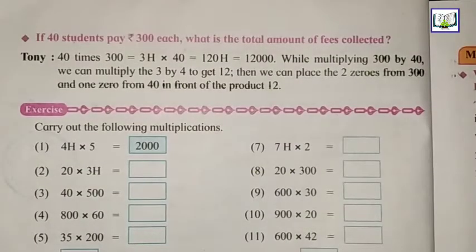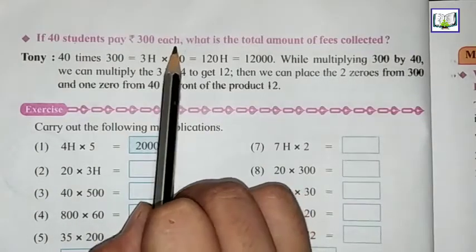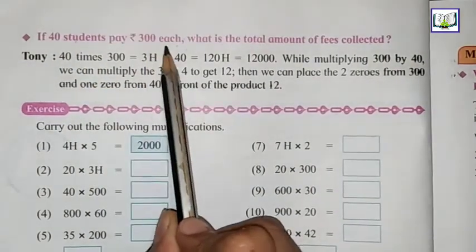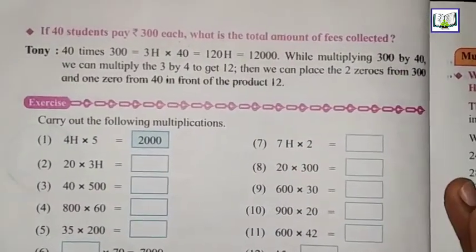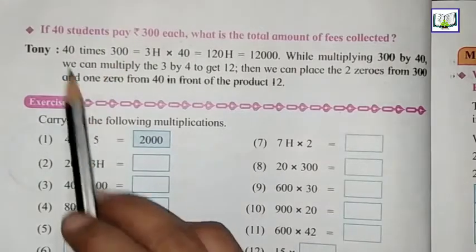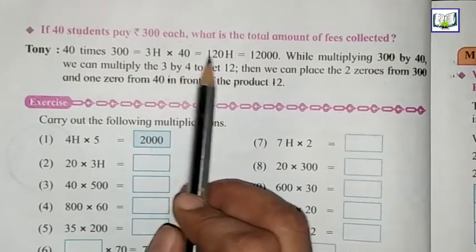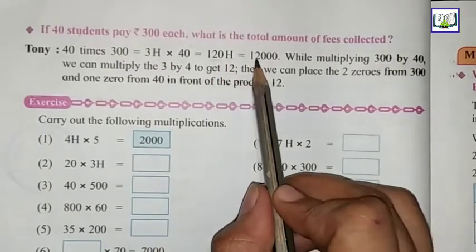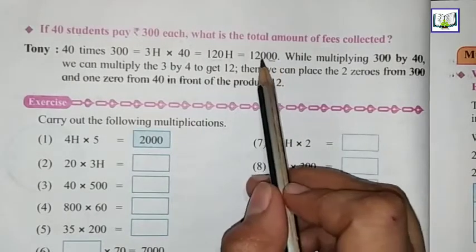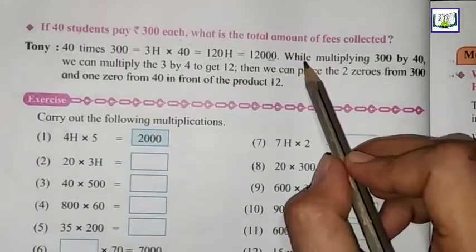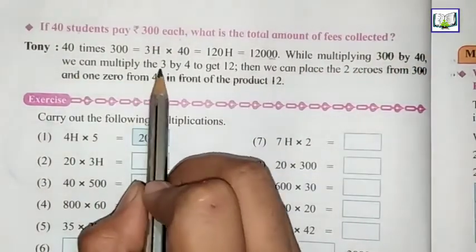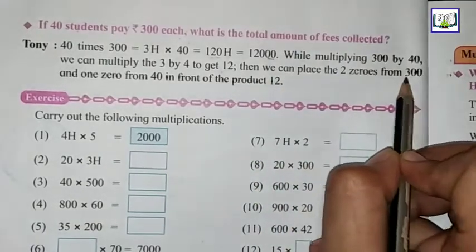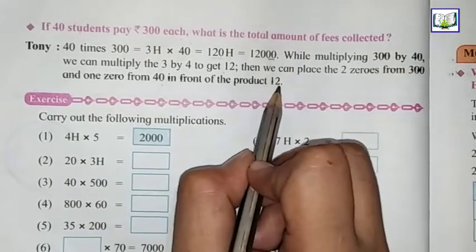This is the next question. If 40 students paid 300 each, what is the total amount of fees collected? We have 40 students, each paying 300 rupees. So 40 times, we will multiply 300. 300 means 3H multiply by 40. 3 times 0 is 0, 3 fours are 12. It becomes 120H. H is written, meaning 2 zeros, so we will add 2 zeros after 120. Total becomes 12,000.